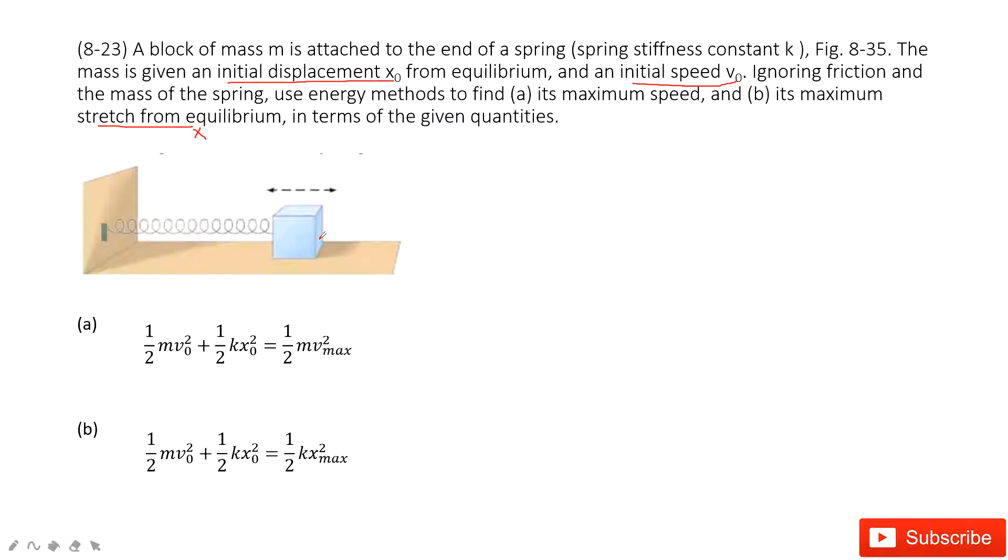The displacement is zero. So when x equals zero, we can get its maximum speed. Because we know initial energy, this one is constant. The initial kinetic energy plus initial potential energy, this side,